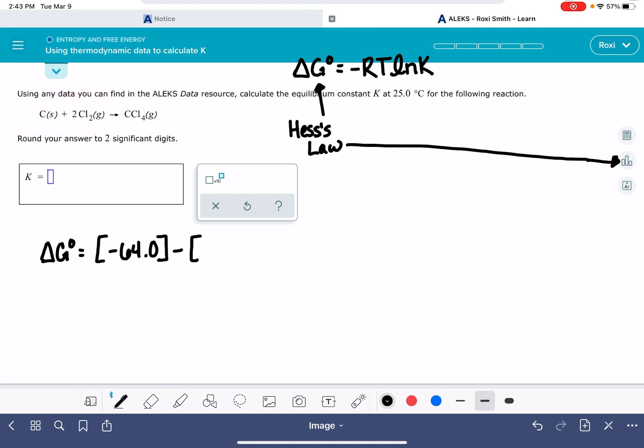We have C solid, which is zero, and our other reactant, 2CL2, and CL2 is also zero. So this delta G value just works out to be negative 64, and again those units are kilojoules.